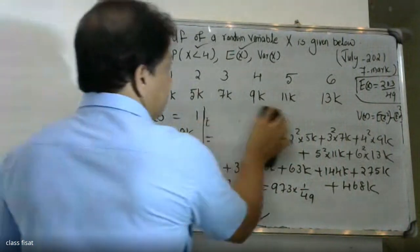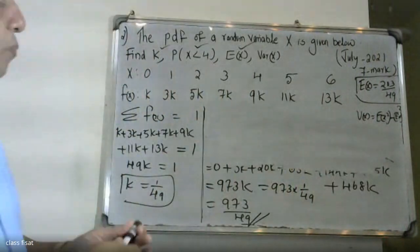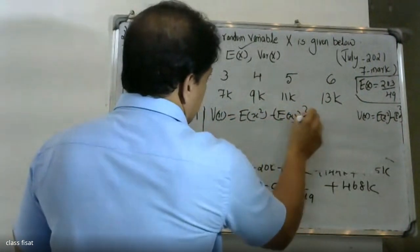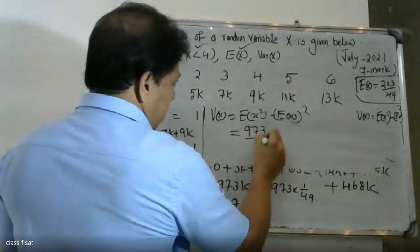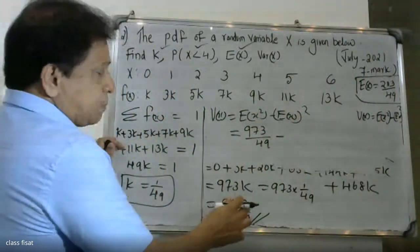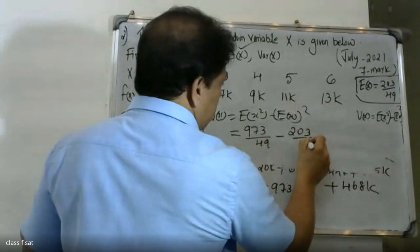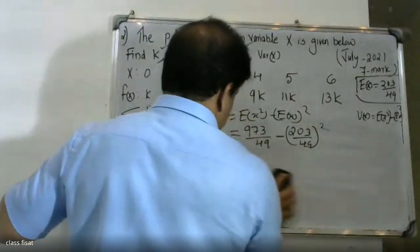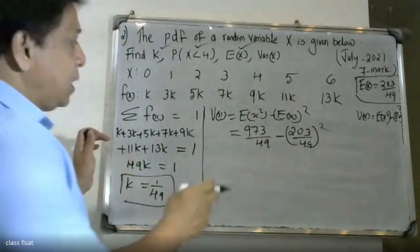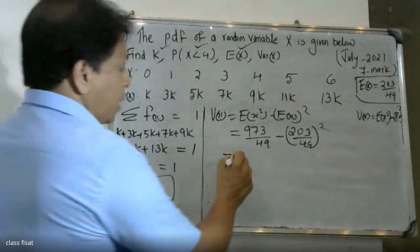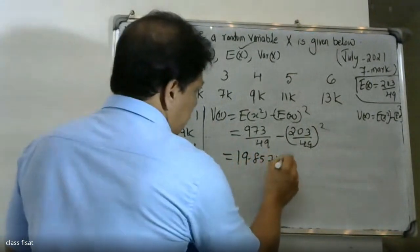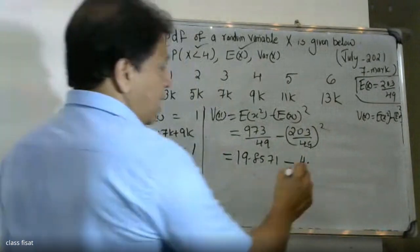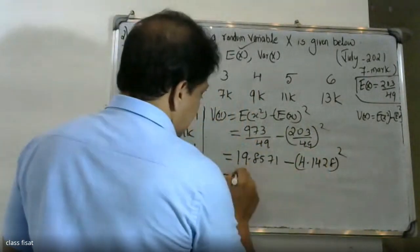Variance of x equals E(x squared) minus E(x) squared. Substituting the computed values: E(x squared) minus the square of E(x), and calculating the final numerical result.